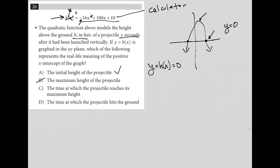Choice C, the time at which the projectile reaches its maximum height. Well, not. So X is time, but the time at which it reaches its maximum height is not true. The time it reaches the maximum height would be somewhere here to correspond with that height. So C is gone.